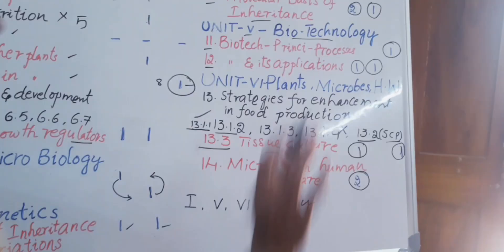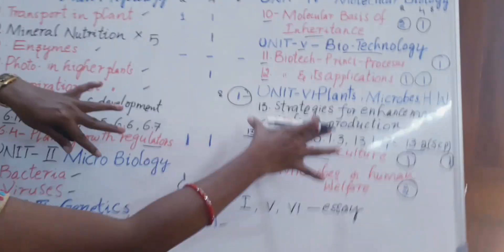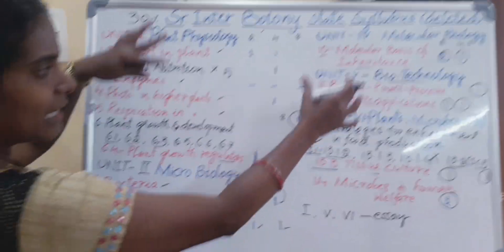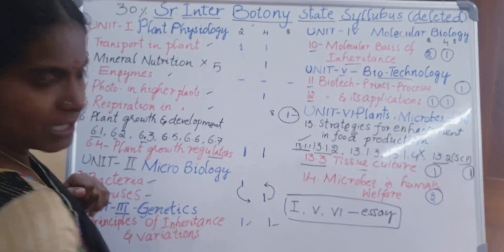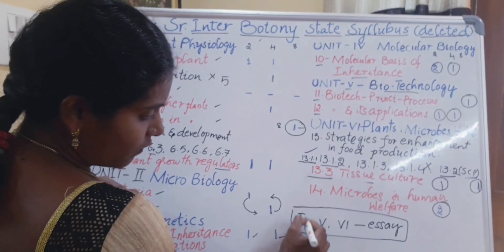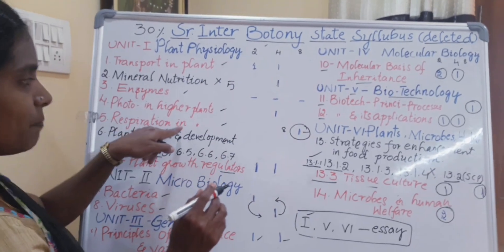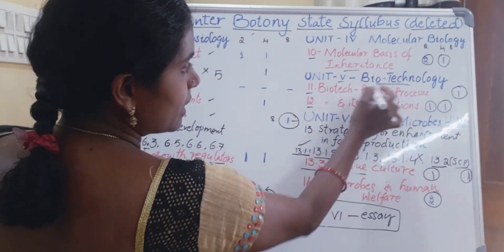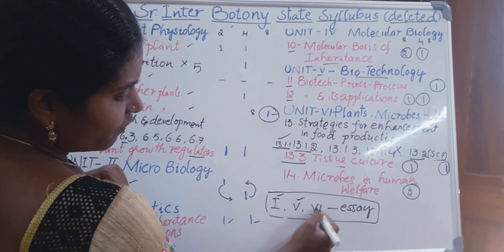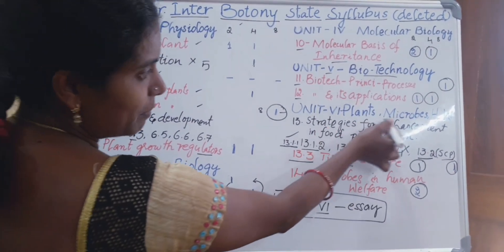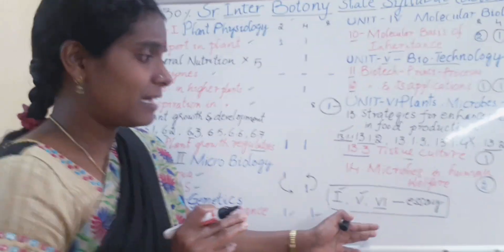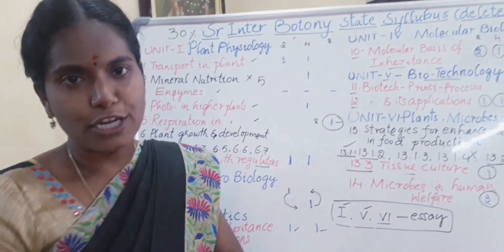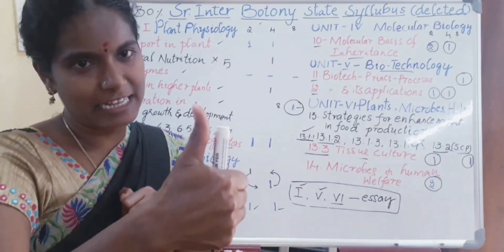Finally, to conclude, the essay question chapters are: from unit one — Respiration in Plants; from unit five — Biotechnology Principles and Processes; from unit six — Tissue Culture and Plants, Microbes and Human Welfare. These are the 30 percent deleted portions. If there are any updates, I will let you know through a video. All the best to all second year students!